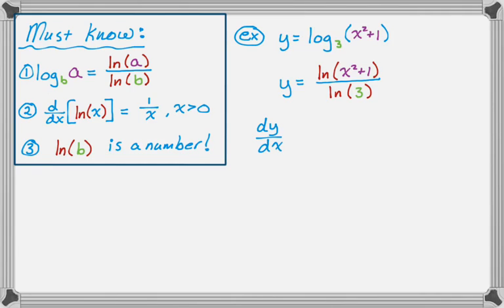So dy dx is going to be... So the 1 over the natural log of 3 is a constant multiple, and now the derivative of the natural log of x squared plus 1 is 1 over x squared plus 1 times the derivative of x squared plus 1, because the chain rule is always going to be involved in these problems.